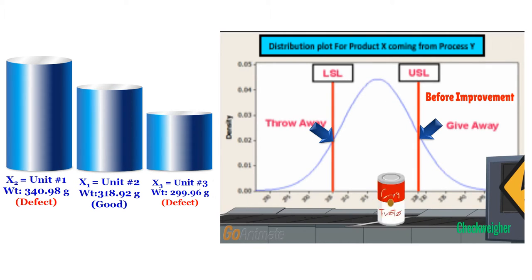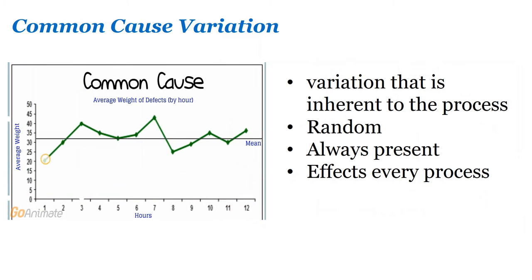Any unit that falls outside of this range is considered to be a defect. Common cause variation is variation that is inherent to the process — that is random, always present, and affects every process. This type of variation exists as a natural part of the manufacturing process and an assignable cause does not exist.